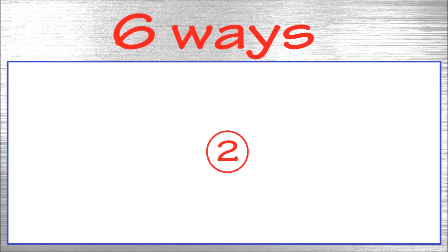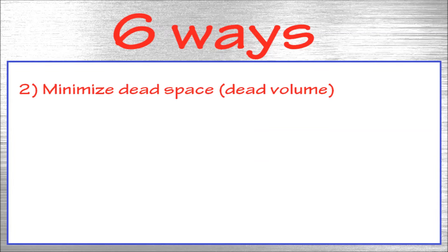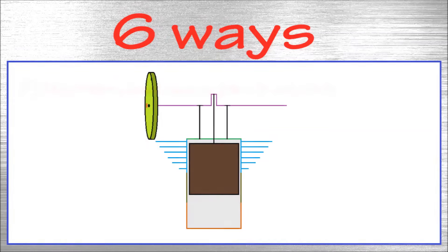Number two: minimize the dead space or dead volume. The dead volume is the volume of air that is left at compression. In other words, the volume that is left above the displacer when it's at the top. This should be as small as possible.